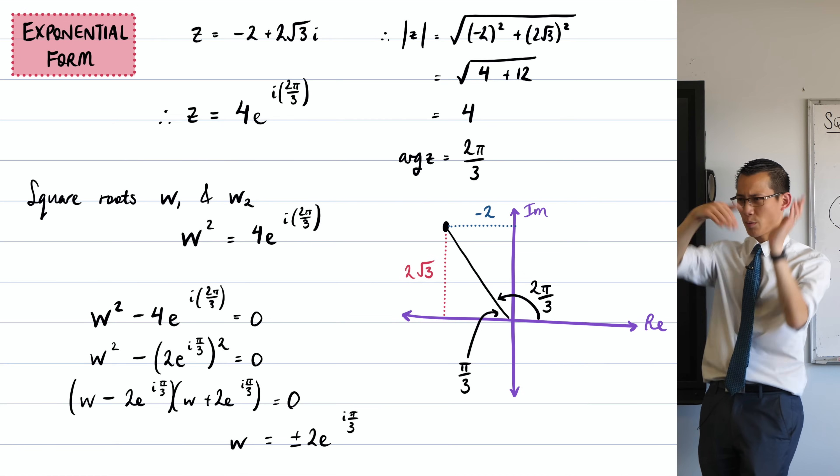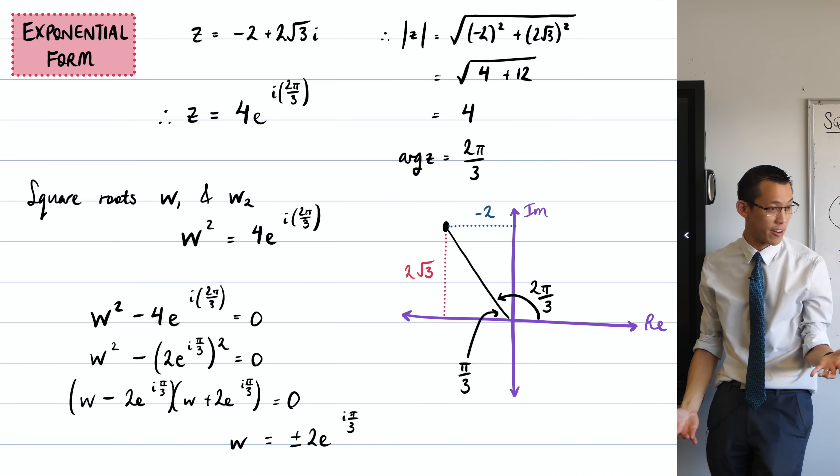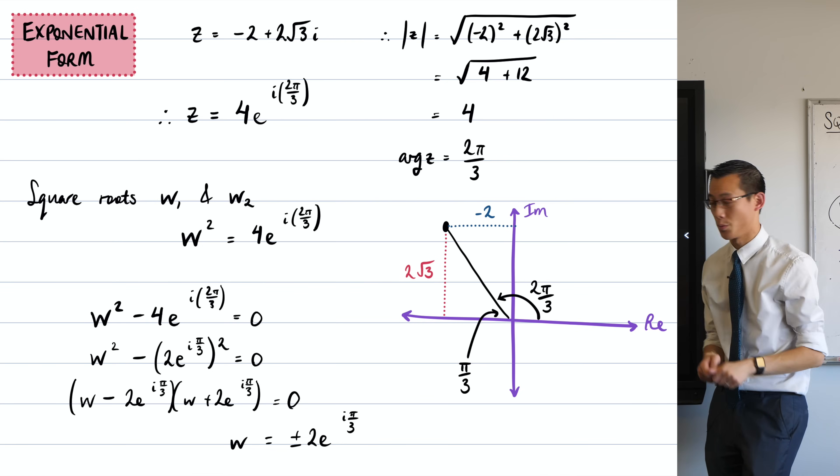but I find it so helpful when working out what my modulus and arguments are, particularly the argument, because I'm like, I don't know, is it negative? Like, which is the principal one? It just seems to me so much of an easier way to think about it that I often draw a diagram even when it's not required of me. It is a very, very convincing argument for the marker and for you as well.